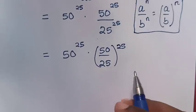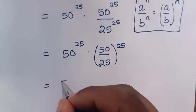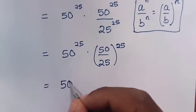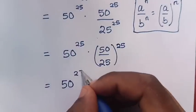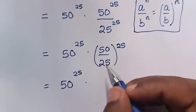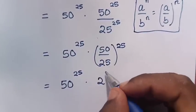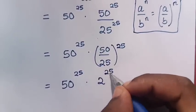So then, here in our equation, it will be equal to 50 power of 25 times 2 power of 25.